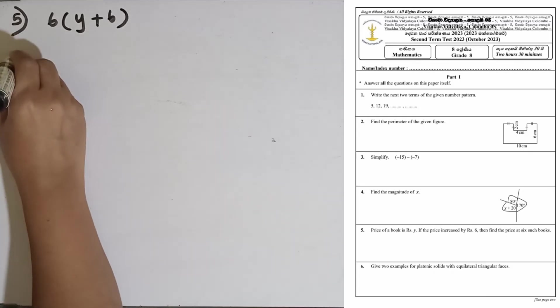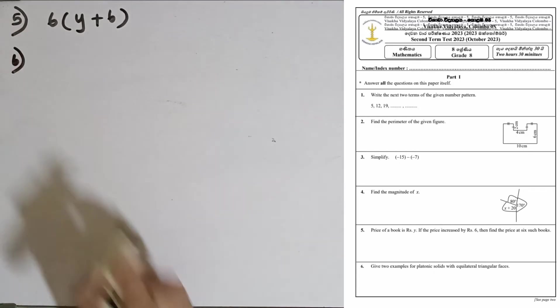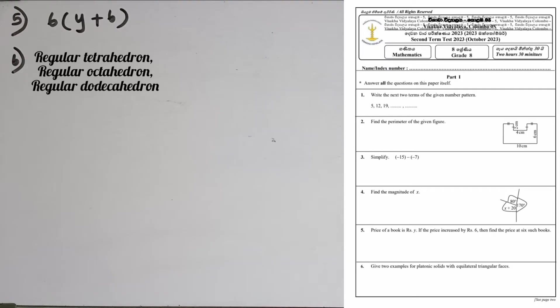Question number 6: Give two examples for platonic solids with equilateral triangular faces. The first one is the regular tetrahedron, then in octahedron also we have equilateral triangular faces, then the next one is the regular icosahedron.